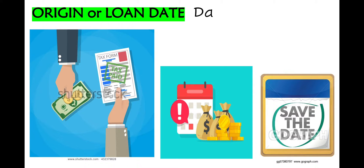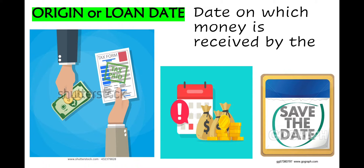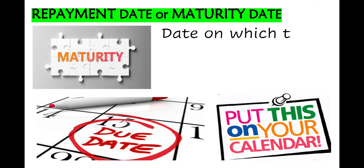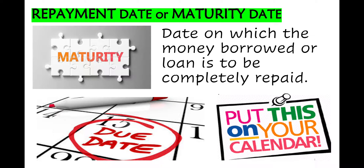Origin or Loan Date is the date on which money is received by the borrower. Repayment Date or Maturity Date is the date on which the money borrowed or loan is to be completely repaid.